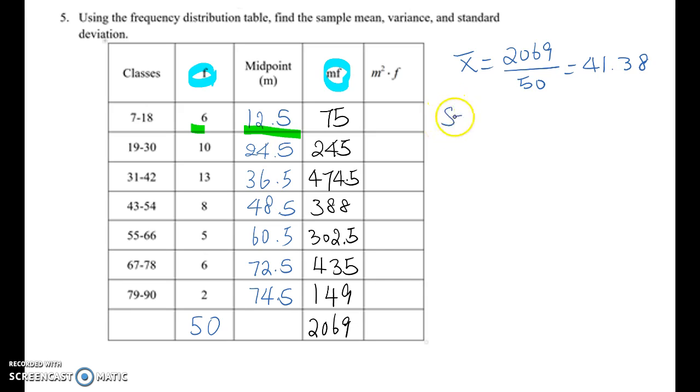Before, we know that s equals square root of n times sigma x-squared times f minus sigma x times f squared over n times n minus 1.